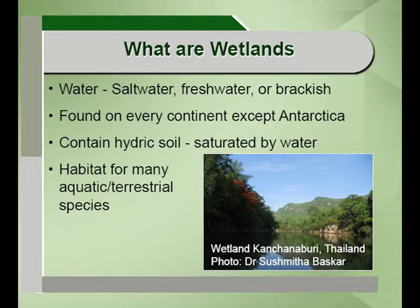They can also be defined by Mitch and Gooseling in 1986 as the lands that are transitional between terrestrial and aquatic ecosystems where the water table is at or nearly at the surface of the land covered by shallow water. That means they are lands sandwiched between two distinct ecosystems: the terrestrial and the aquatic ecosystems.